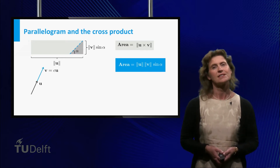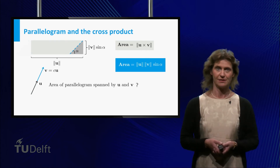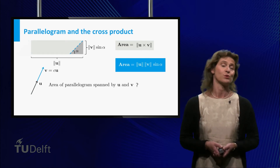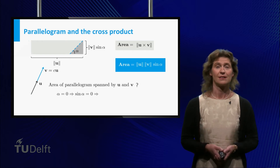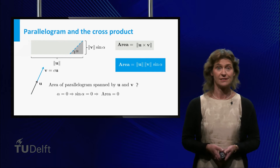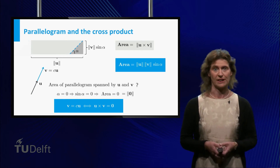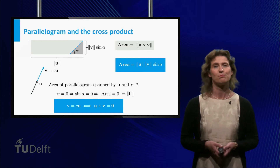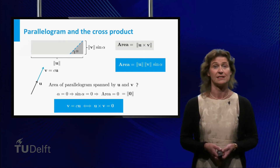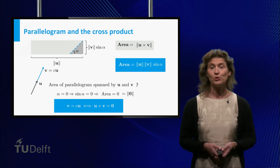But what if v is a scalar multiple of u? What is the area of the parallelogram spanned by u and v? In this situation alpha equals zero, and so the sine of alpha is also zero. So the area is zero, and zero is the norm of the zero vector. This implies that the cross product of two such vectors equals the zero vector. The parallelogram spanned by two vectors which are scalar multiples of each other is a line, which clearly has area zero. You have also seen a way to determine whether two vectors are collinear by computing their cross product.